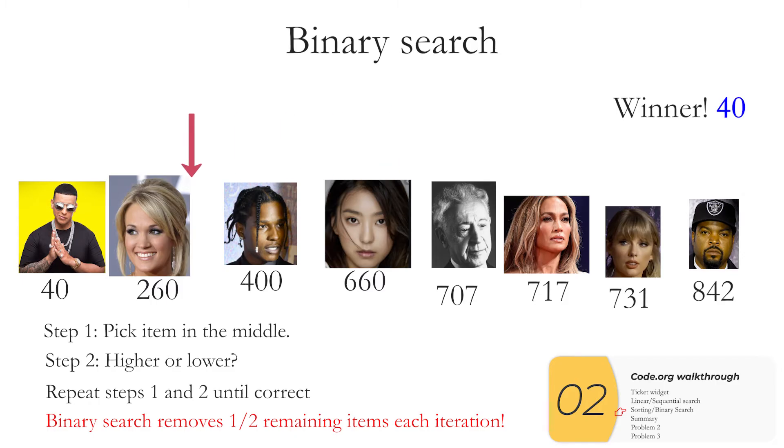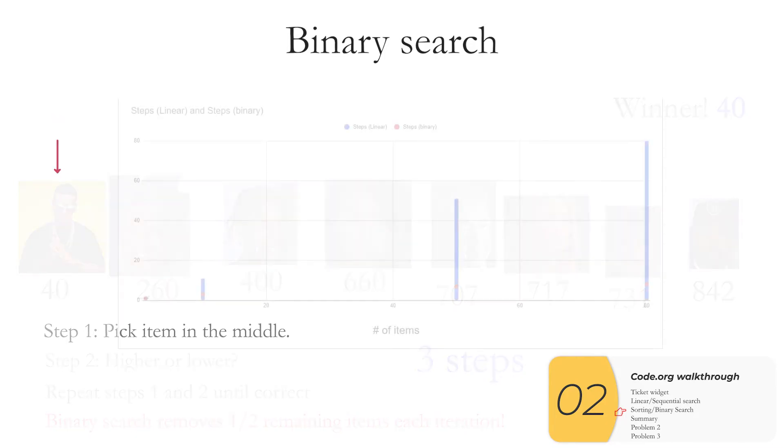Here's an example where if the item I'm looking for is at the very beginning linear would find it in one step and binary would take three. But most of the time if you averaged out the results over many many many searches binary would be better.